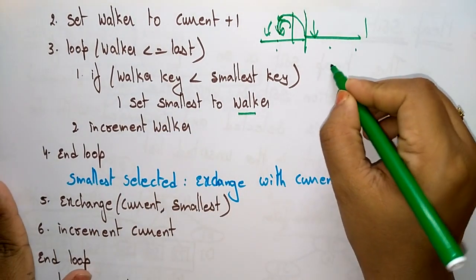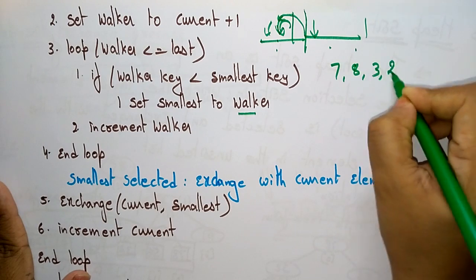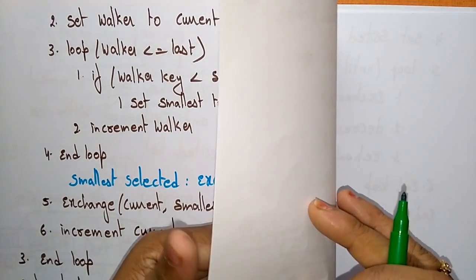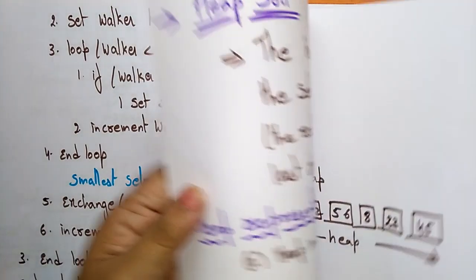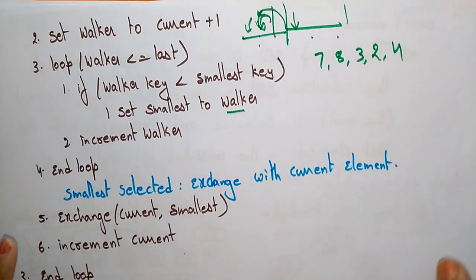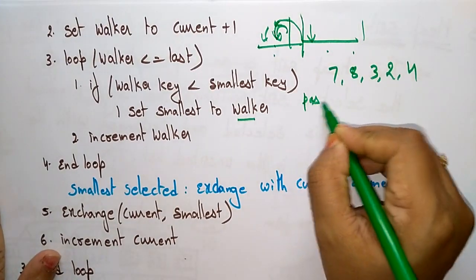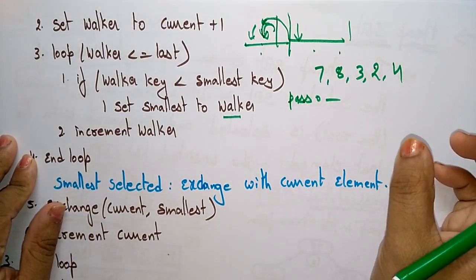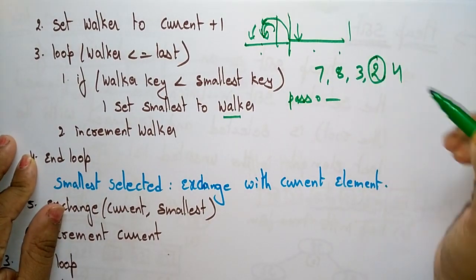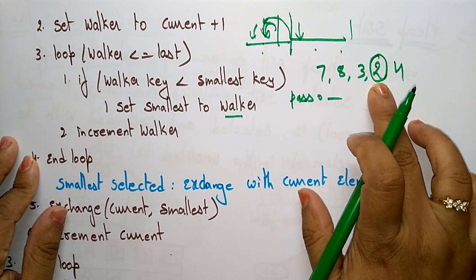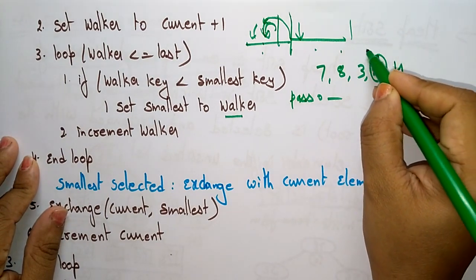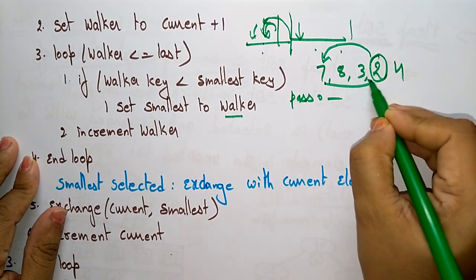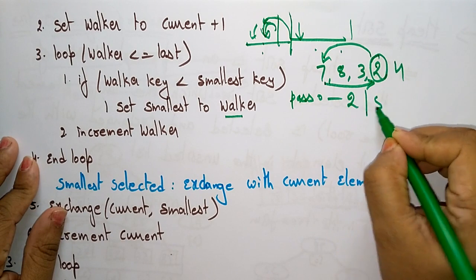Take the array 7, 8, 3, 2, 4 — this is the unsorted array. According to the algorithm, set current to zero — the pass is 0. In the first pass, select the smallest element in the array. The smallest element is 2, so this array is completely unordered and the smallest element should be swapped with the starting element of the unsorted array.